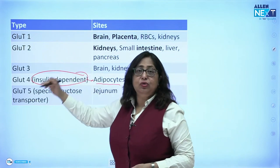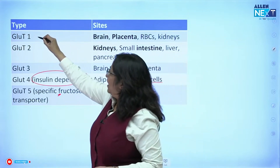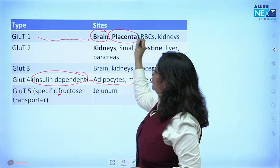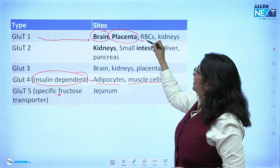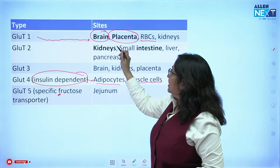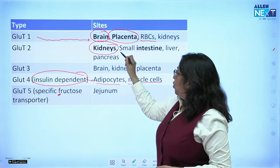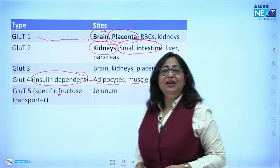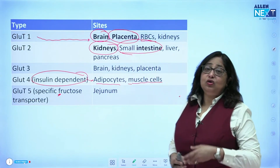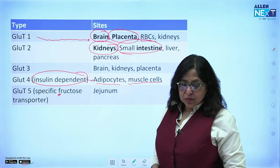GLUT-1, GLUT-2, and GLUT-3 can cause some confusion, so let's clarify. GLUT-1 is in the brain (one brain), in the placenta (one placenta), in the RBCs, and in the kidneys — though in the kidneys GLUT-2 is more abundant. GLUT-2 is found in the kidneys, in the small and large intestine, and in the liver and pancreas — two important GI organs.